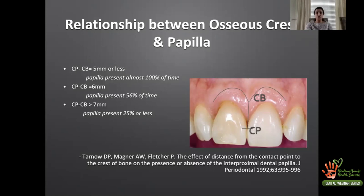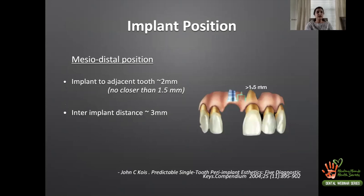This is the aesthetic issue in anterior implant situations — you must consider where the contact point is in relation to the crestal bone and how much distance exists between them. Regarding three-dimensional implant positioning in the mesiodistal aspect, John Kois states the space between a tooth and an implant should be about 2 mm and in no situation less than 1.5 mm. The space between two implants should be about 3 mm.